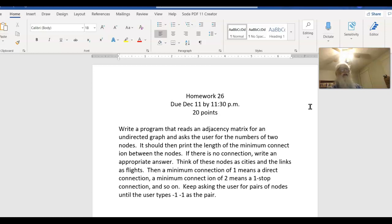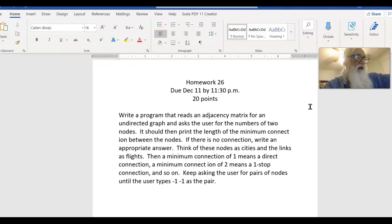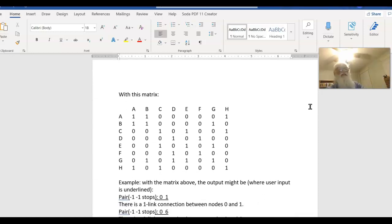What I'm going to ask you to do is read in an adjacency matrix, and then read in a pair of cities and tell me what the minimum connection is that I can make between those two cities. The cities will not be by name, they'll be by number, to make it easier. I'd like you to keep repeating the read in pairs of cities until the user puts in a negative one, negative one. Here is the matrix, one matrix we might use. What this says is there is a direct connection from A to B, a direct connection from A to H, but there are no direct connections from A to C, A to D, A to E, A to F, A to G.